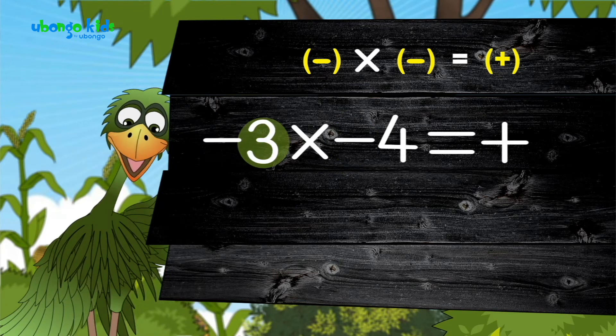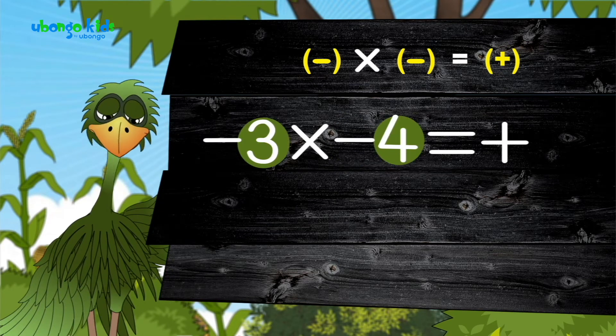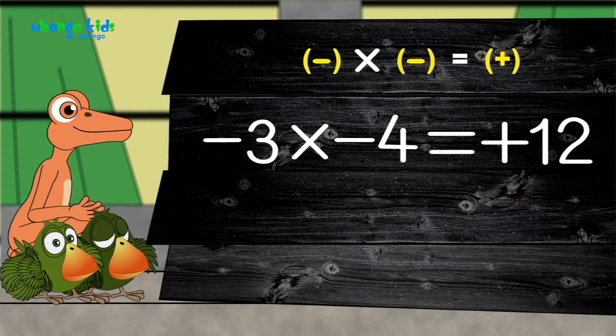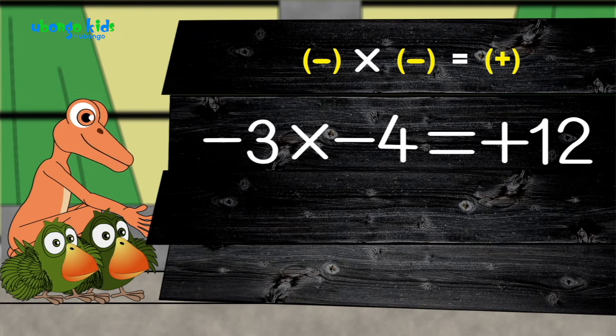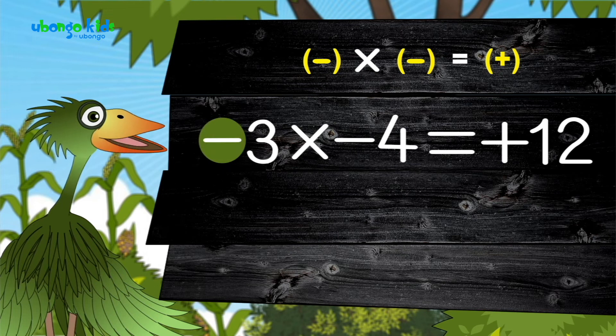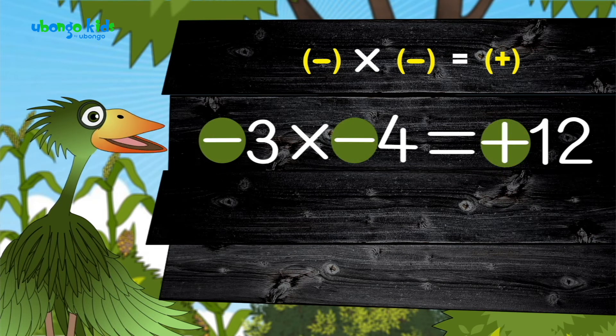So, three times four is what, children? Twelve. What's that in Kiswahili? And negative times negative is positive.